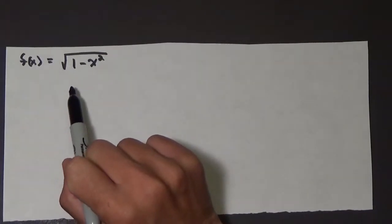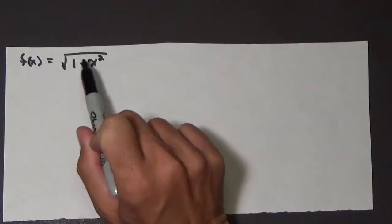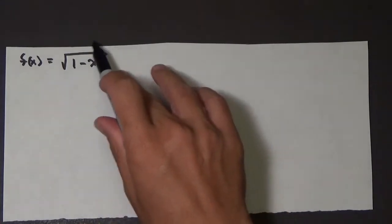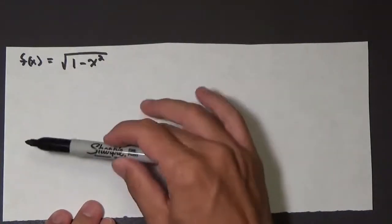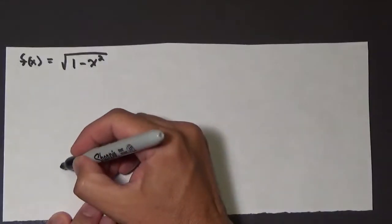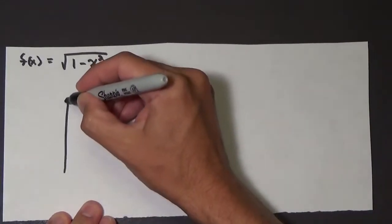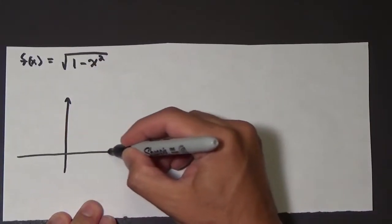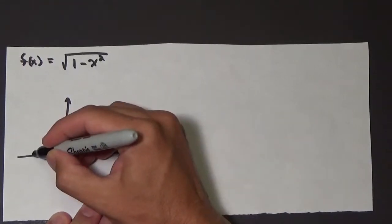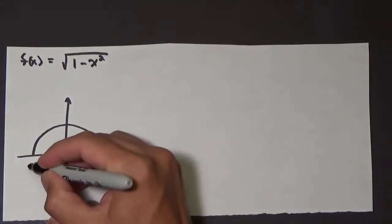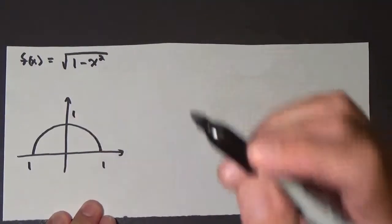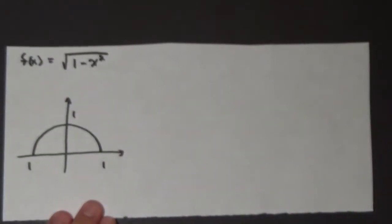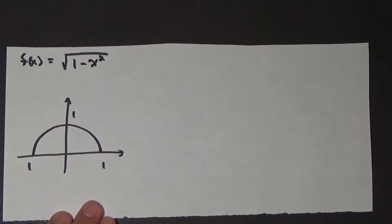We're going to look at a couple of limits. For this kind of function we definitely want to graph it real quick. Right away we can see that this is the upper half of a circle with a radius of 1. So that's 1, 1, 1. There we go. There's a graph of that particular function.